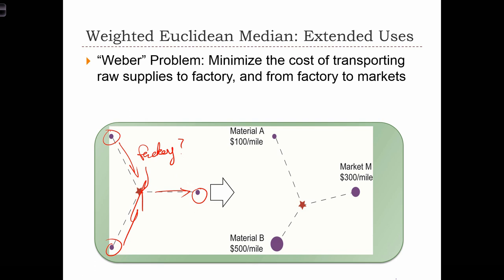Now if we were to ignore the fact that different goods can ship at different cost per mile, then the best location for the factory is simply in the middle of the three points. But let's take into consideration the fact that iron from location B travels at $500 per mile, paint from material A travels at $100 per mile, and the finished product can travel from the factory to the market at $300 per mile.